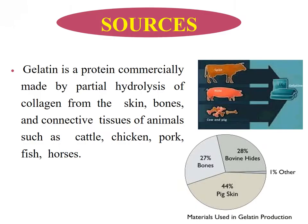Here we can see the sources of gelatin. Gelatin protein comes from: 27% bone, 28% bovine hide, 1% other sources, and 44% pig skin. These are the materials used in gelatin production.